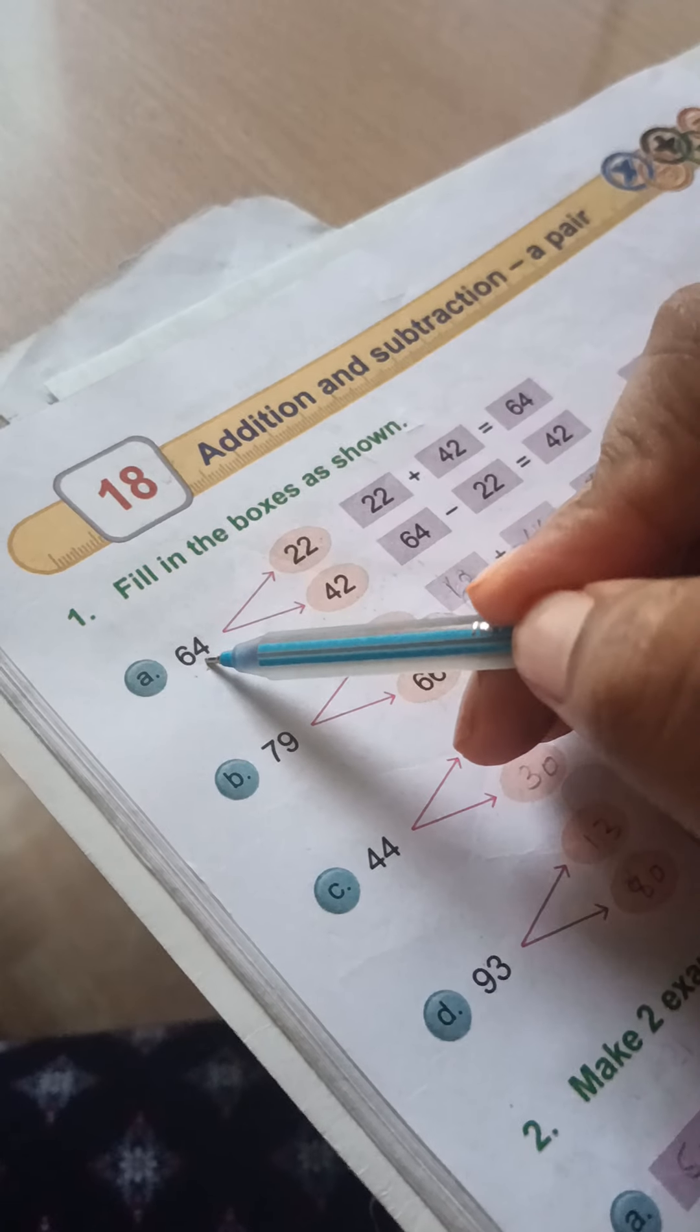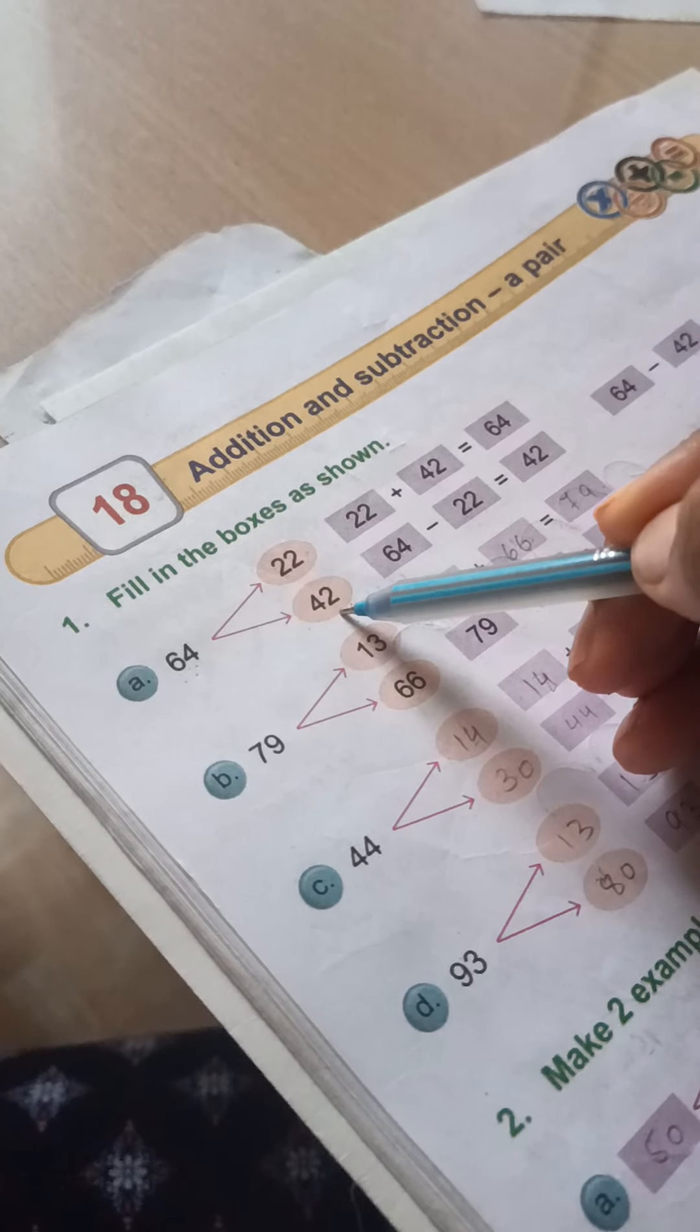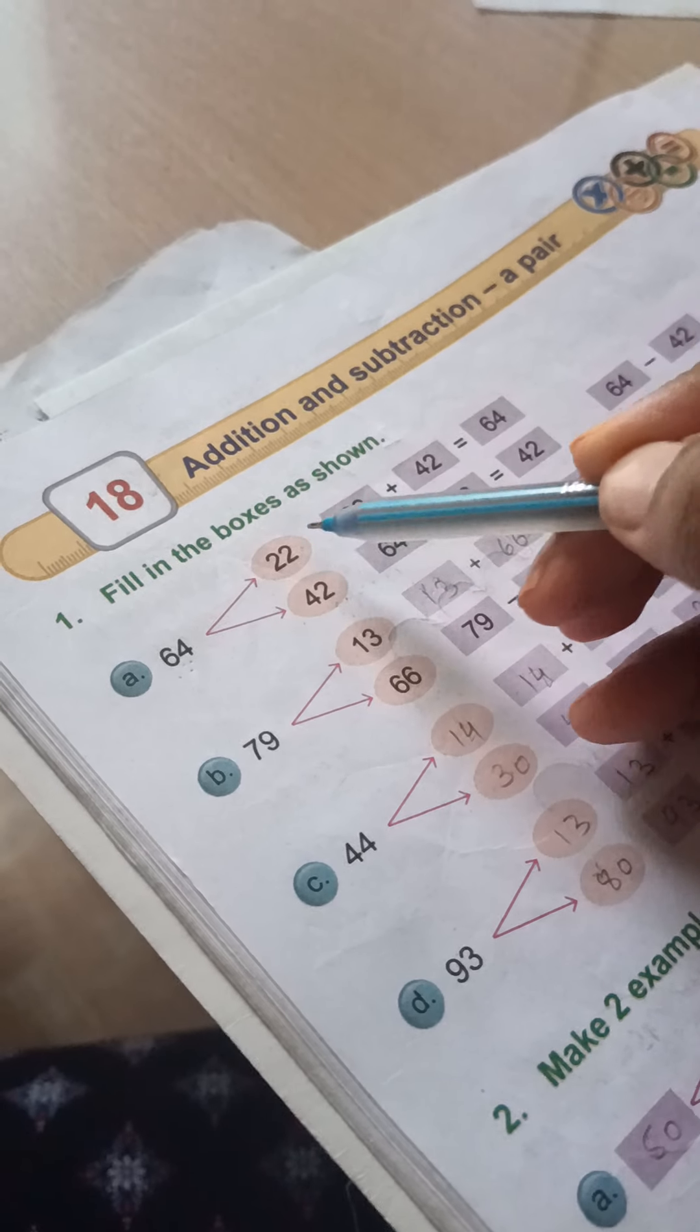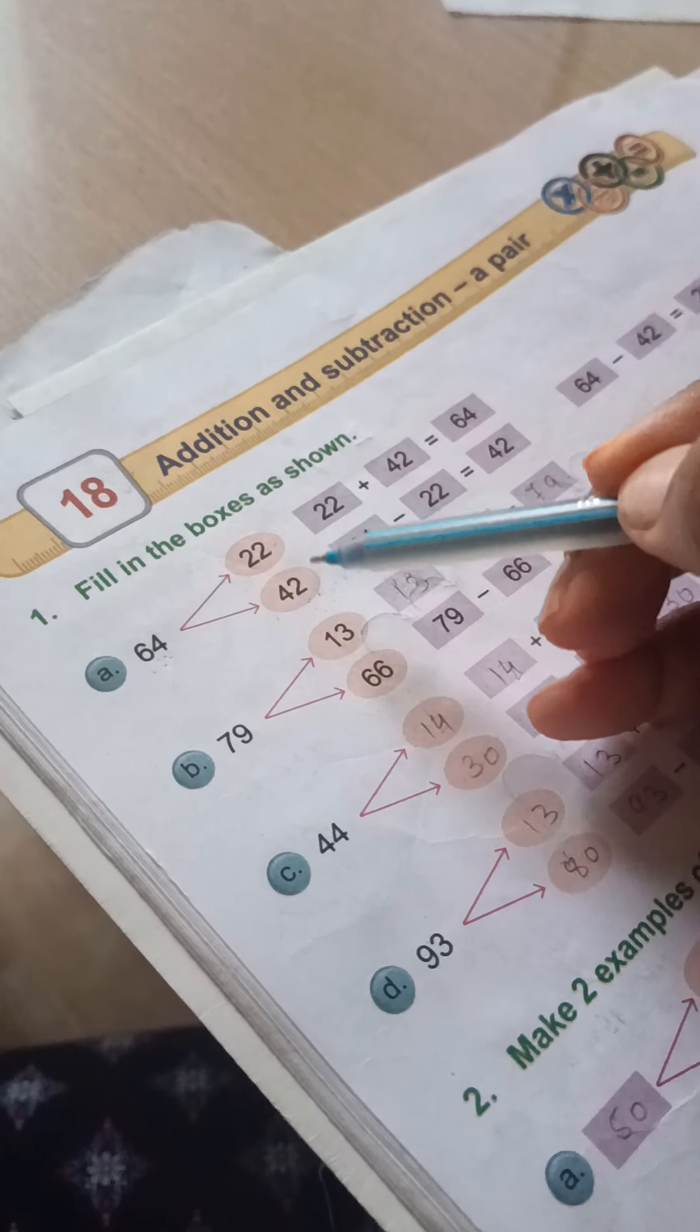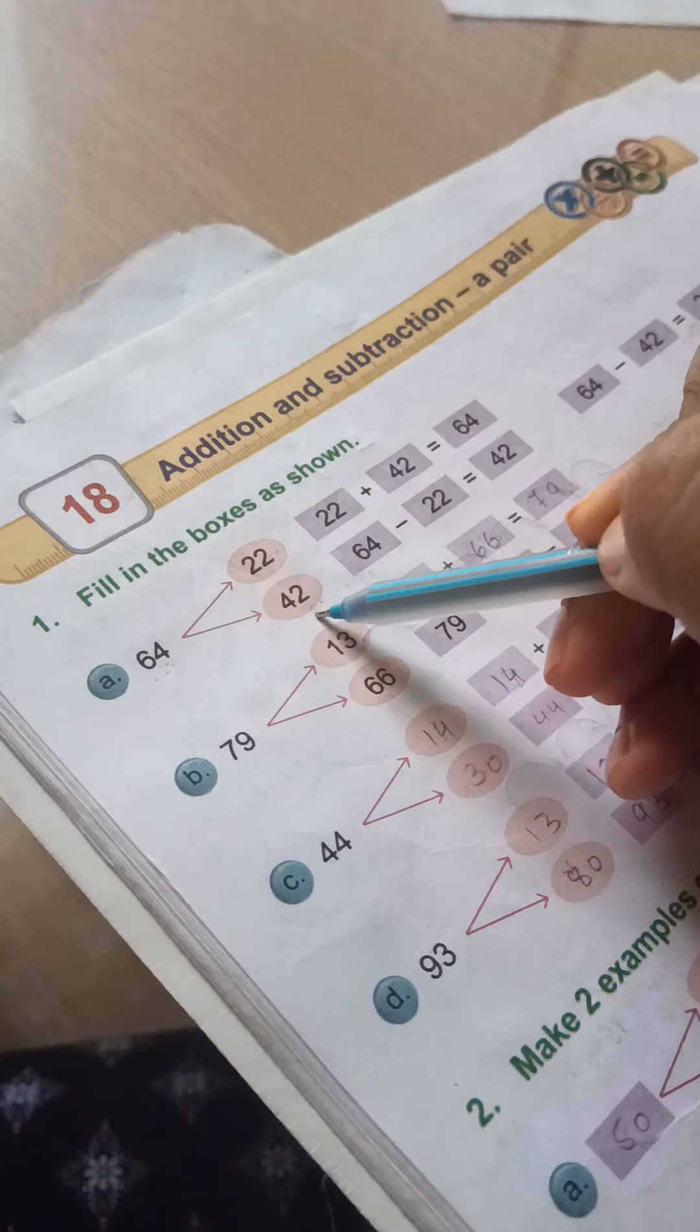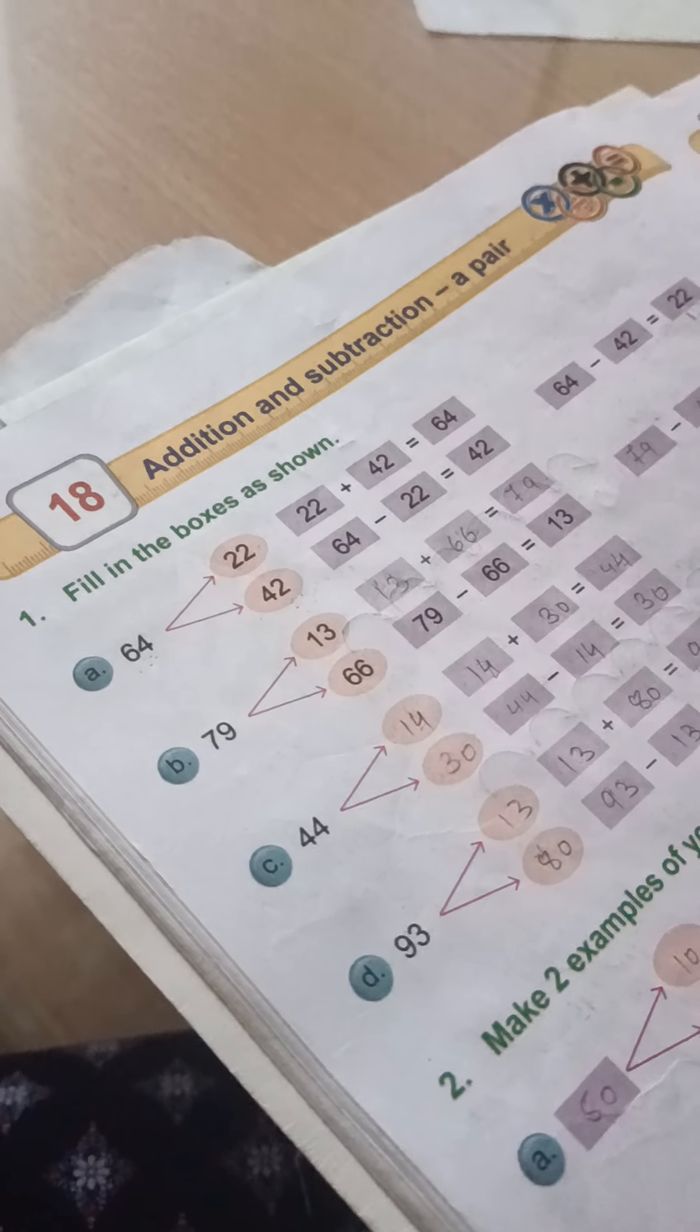After that, 64 is 64, and in 64 we have one arrow, this is given. In 64, if we have minus 42, then the answer is 22. In 64, if we have 22 minus, then the answer is 42. Understood? So we have to follow this method.